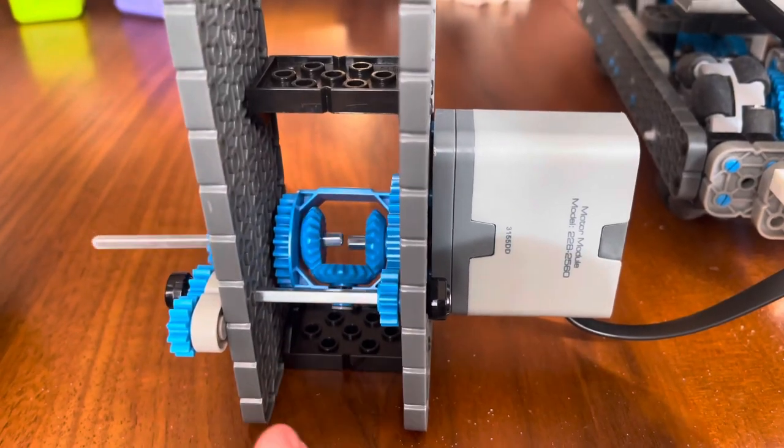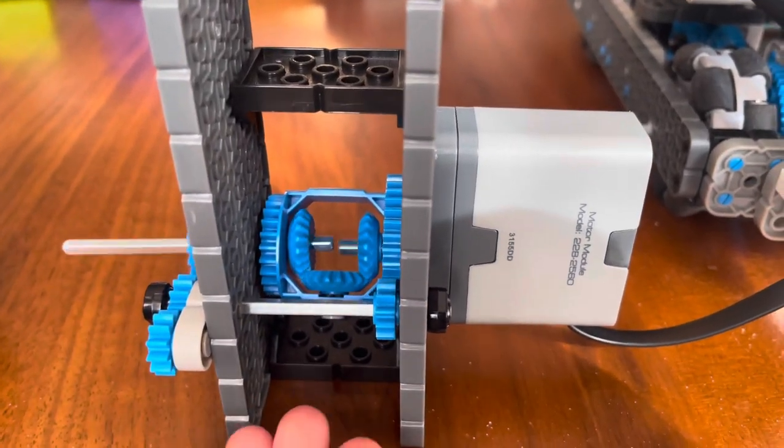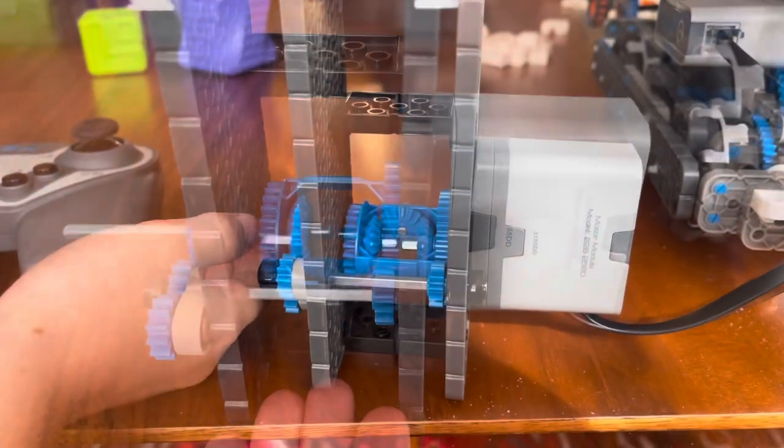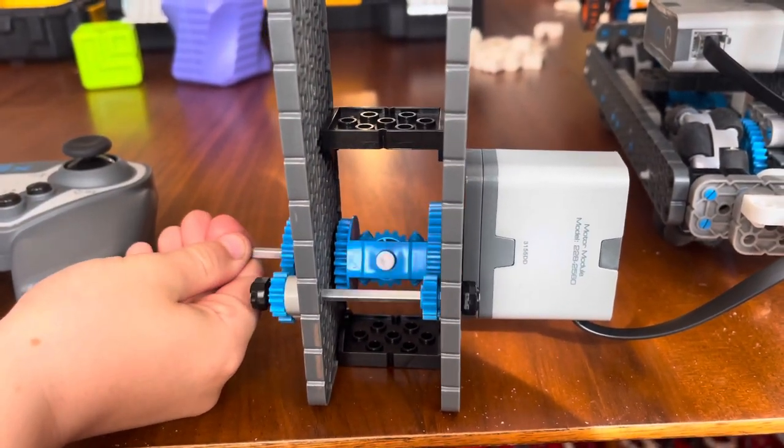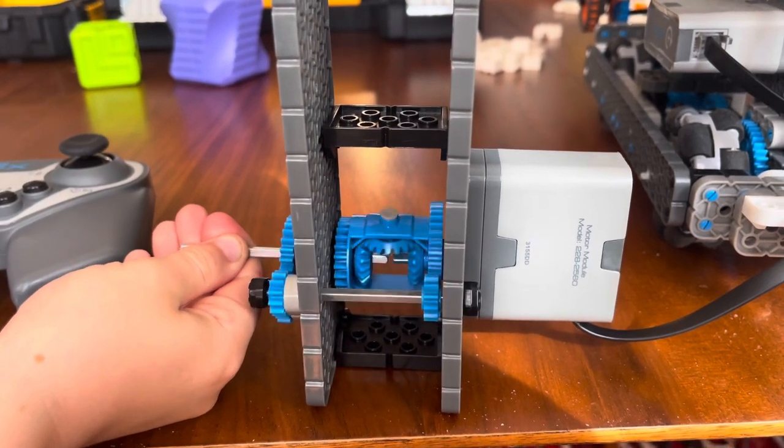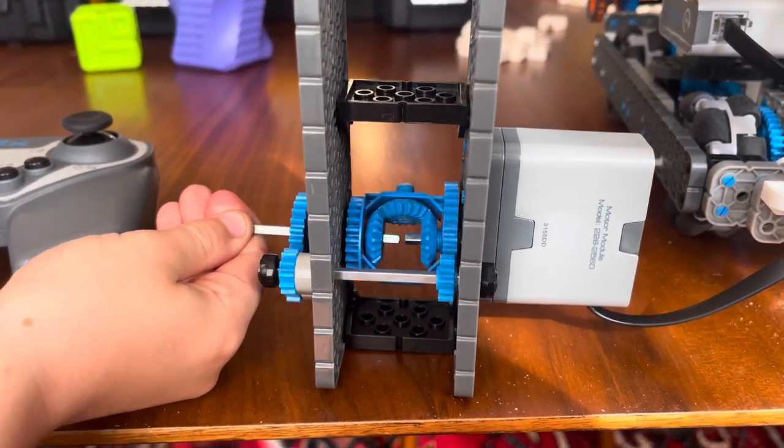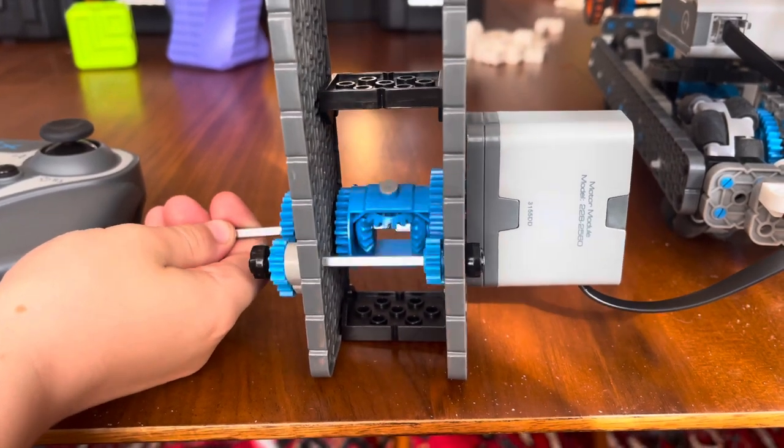This is our differential gearbox. It spins fast when there's no resistance, but when you add resistance, it spins the entire differential gear, lowering the gear ratio. This makes it go slower, but it adds more torque.